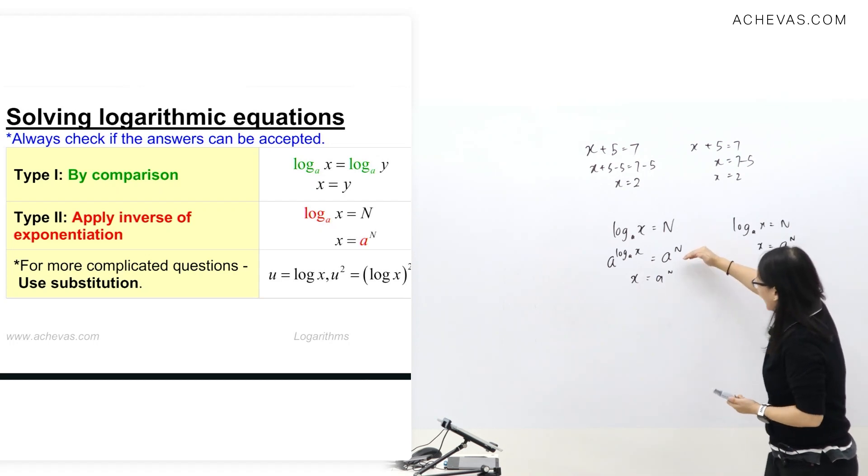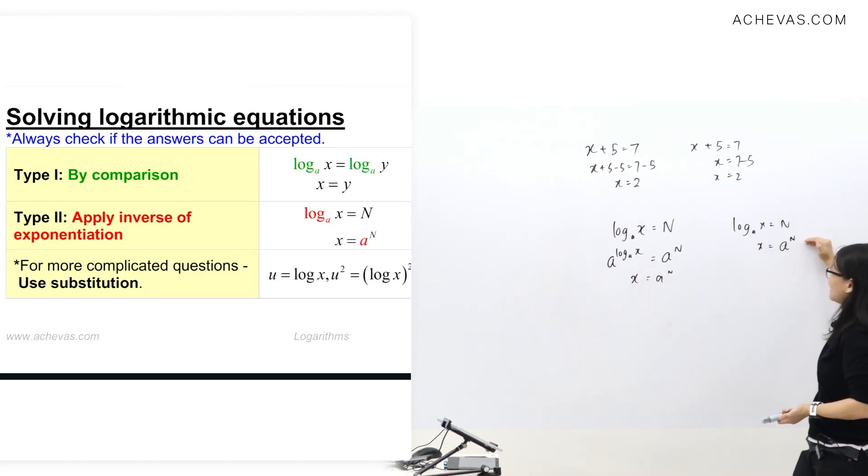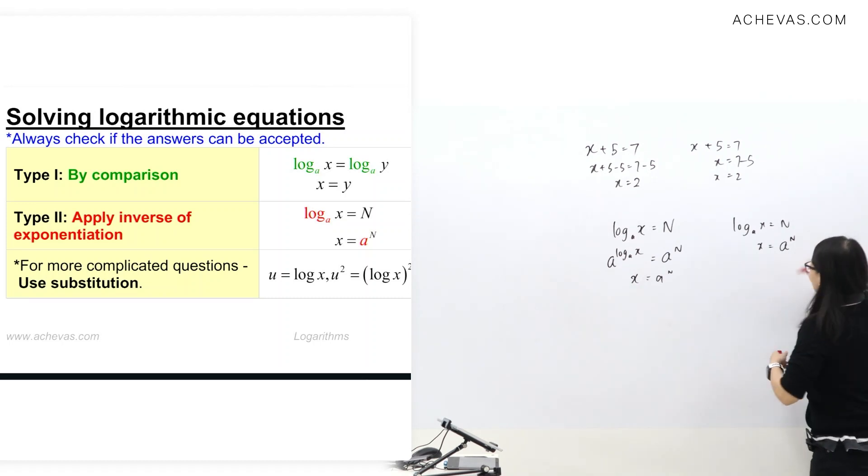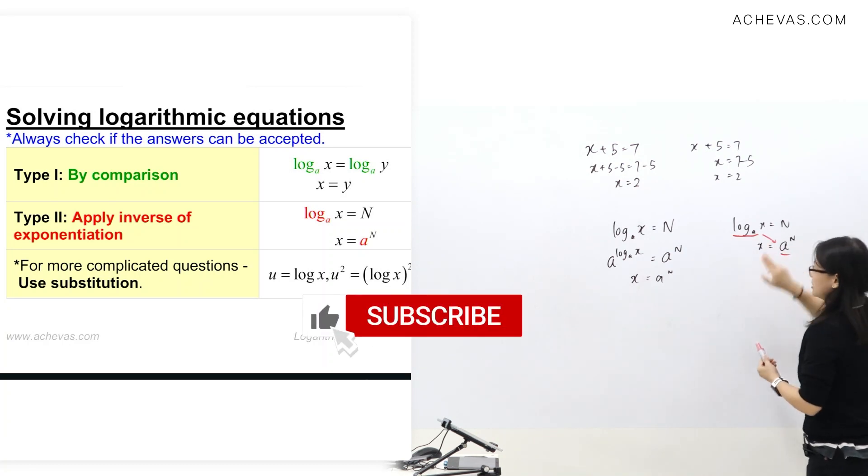So I want you to understand why like this. After some time, the one I write there is the already skipped one. Because after some time, you only need to know: change, change like this. Exponential, take an exponent base A. This is log base A, index base A, right? Log base A, index base A, just change it.